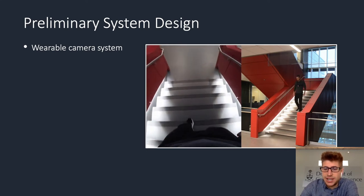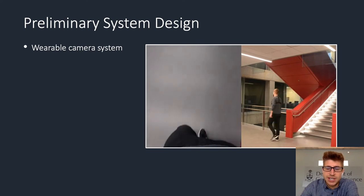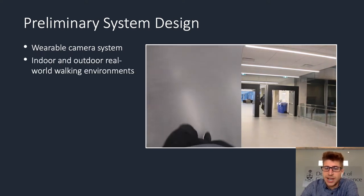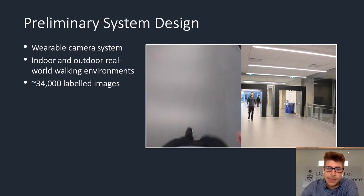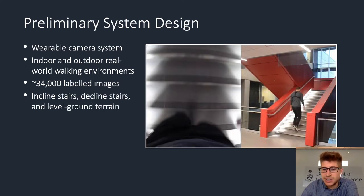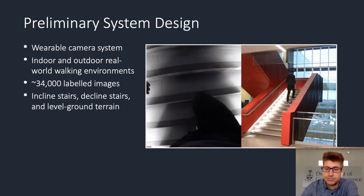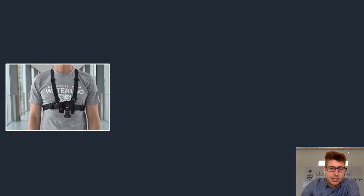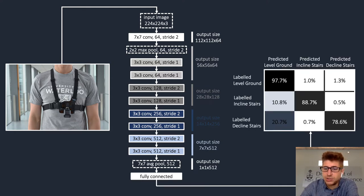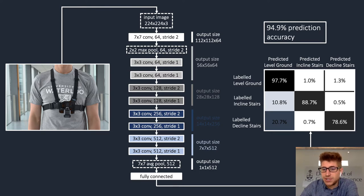Back in 2018, we designed our preliminary system using a chest-mounted wearable camera to collect images of indoor and outdoor real-world walking environments. We then manually labeled approximately 34,000 images as either incline stairs, decline stairs, or level ground terrain. These wearable camera images served as inputs to a custom-designed deep convolutional neural network for image classification. The resulting multi-class confusion matrix showed our preliminary system achieved approximately 95% overall prediction accuracy on this real-world visual data.